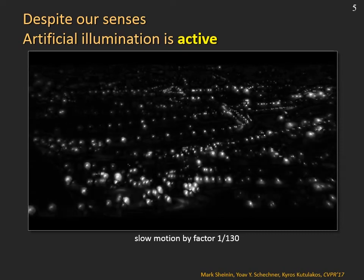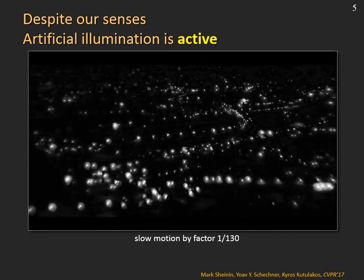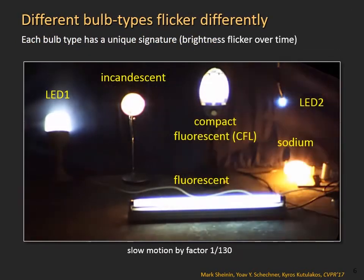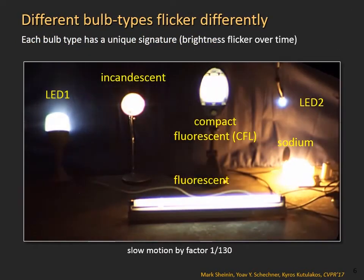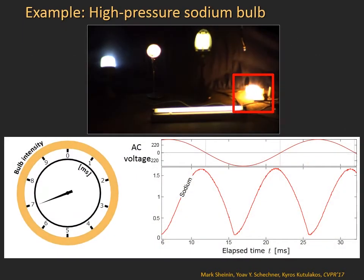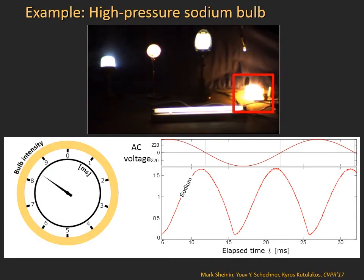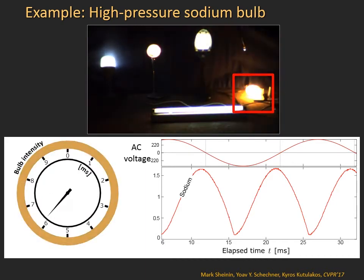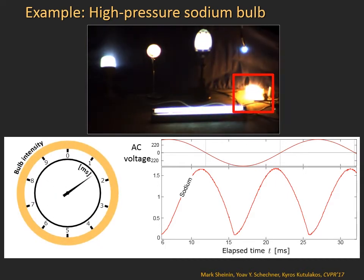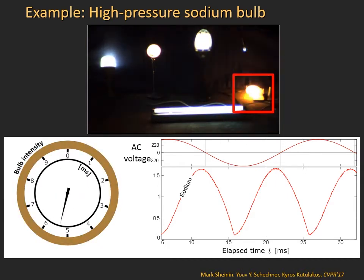The lights in the scene flicker because most of the bulbs are powered by the electric grid. Each bulb type has a unique flicker signature in time. For example, here is the signature of a sodium bulb. These bulbs are common in street lighting. The spinning clock illustrates the periodic nature of the bulb's flicker. A bulb's flicker cycle lasts one hundredth of a second.